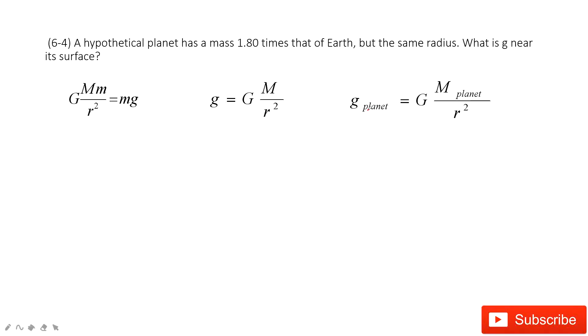Very similarly, we can get this g on the planet equals the capital G times the mass of the planet divided by the radius of the planet squared. And this radius has the same radius as Earth, so both of them are R.